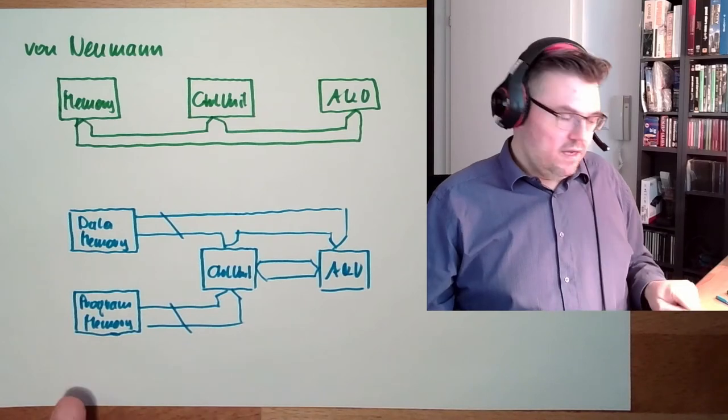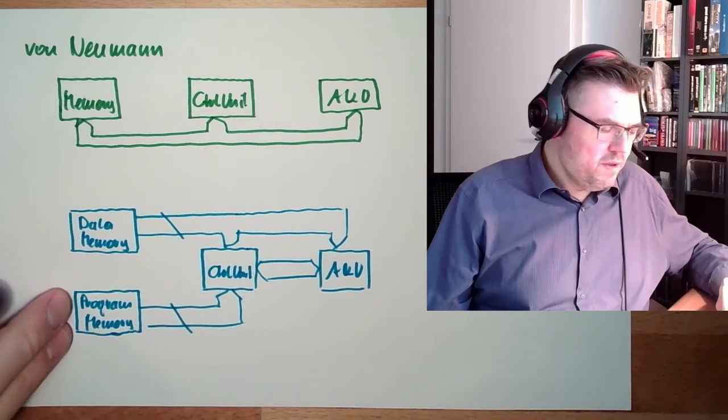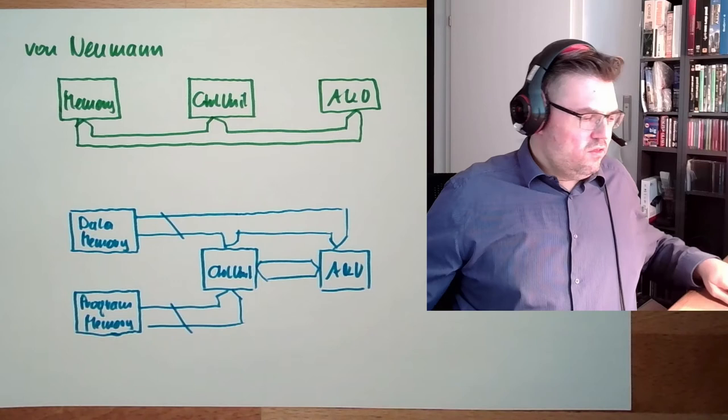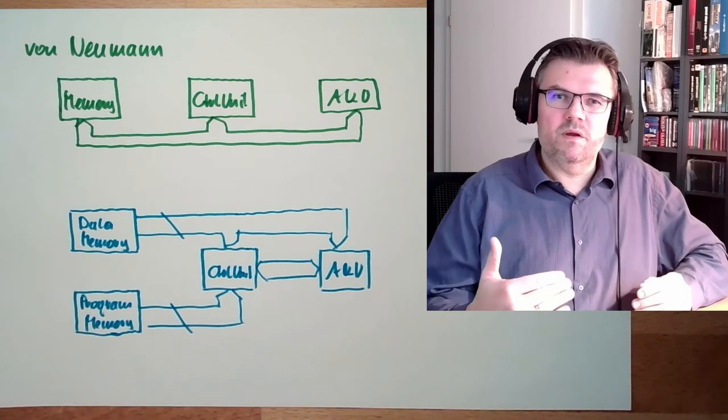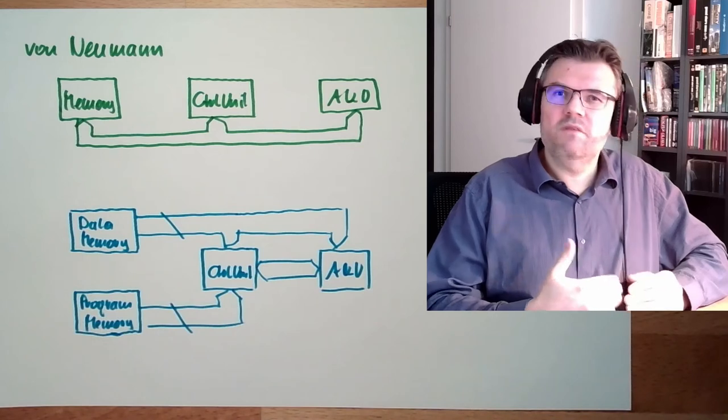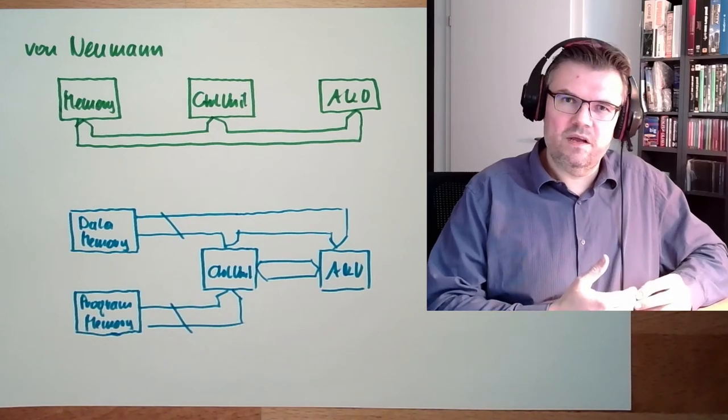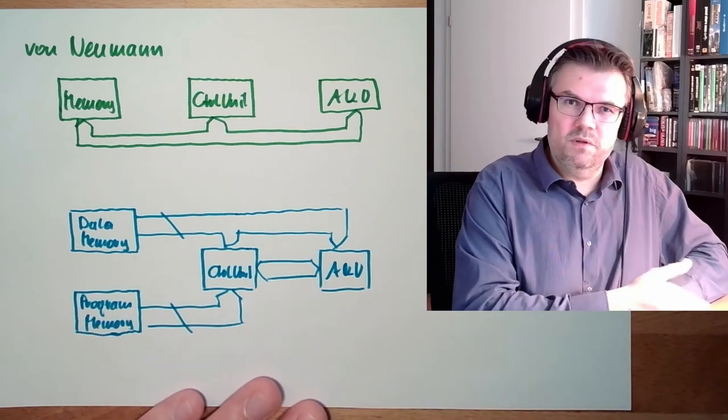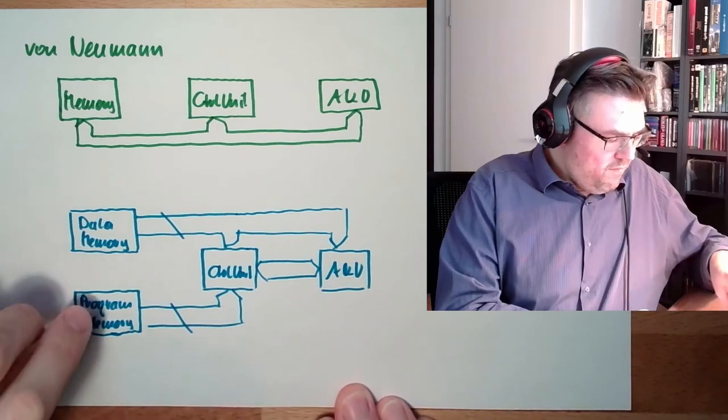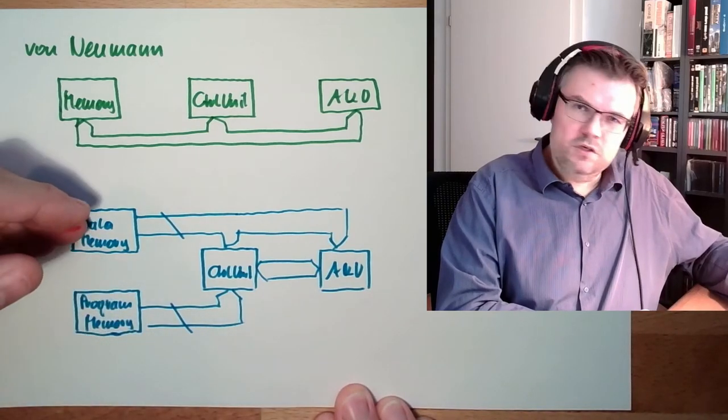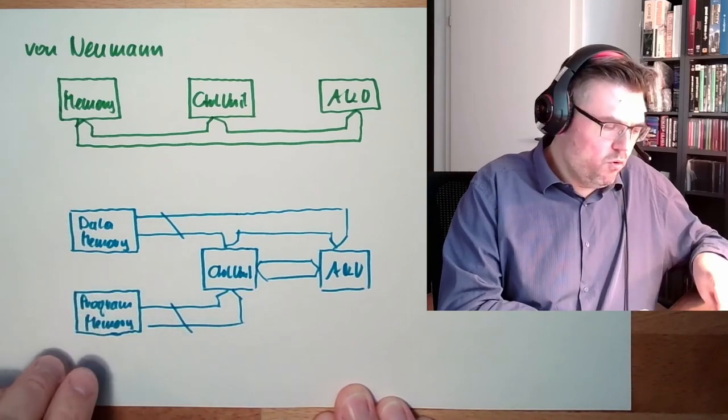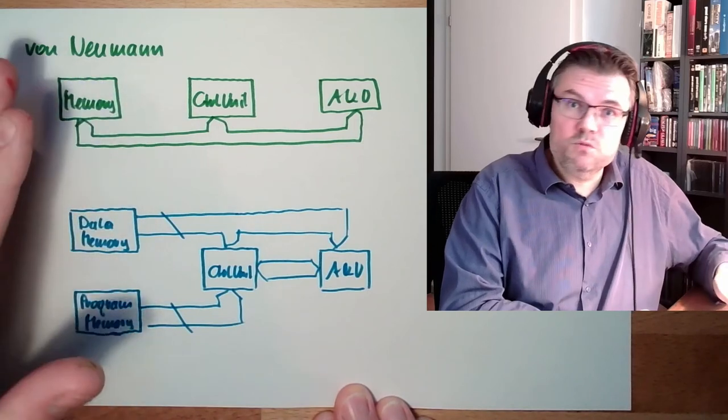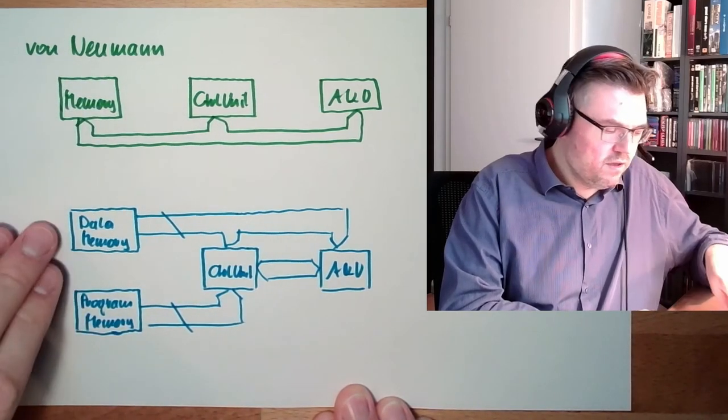The downsides of this architecture are that this program here cannot be altered too easily. So this means dynamically loaded program parts of program - in Windows they are called DLLs, dynamically linked libraries - it's not easily possible here. And also, if I have a small program and I have huge data, I cannot just share memory and say okay, if a small program here the memory is shared. If I have small program I can have more data and vice versa. This is not possible here. If something is full, then it's full.